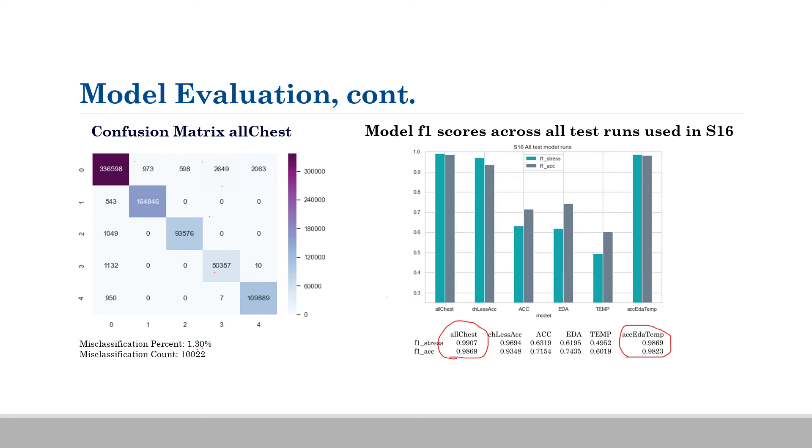This is a continuation of the previous slide. Misclassification count, 10,022, which gave a percent of 0.3 percent misclassified. You see from the chart and the plot or the table and plot on the right, all the scores, F1 stress and F1 accuracy comparison. You see that all chest and the accelerometer EDA temp were fairly close in accuracy.